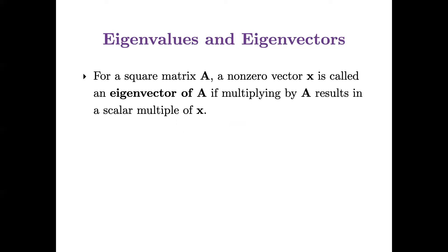And that is the definition of an eigenvector for a given matrix. So for a square matrix A, a non-zero vector x is called an eigenvector of A if multiplying by A results in a scalar multiple of x. So this is the very famous eigenvalue equation: A times x is equal to some scalar lambda times x. That scalar lambda is called the eigenvalue associated with this eigenvector.